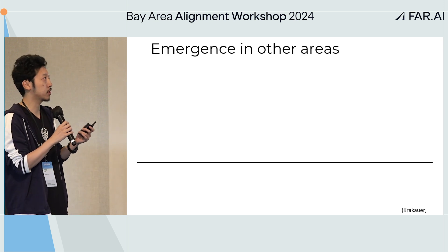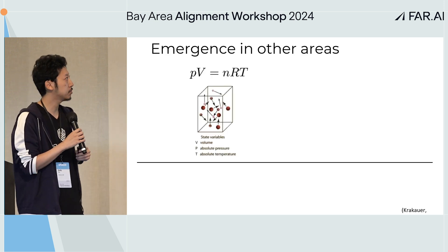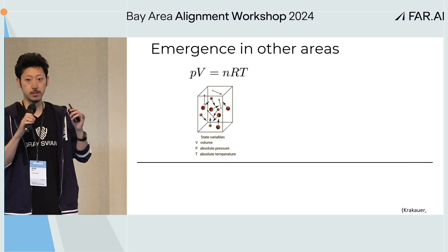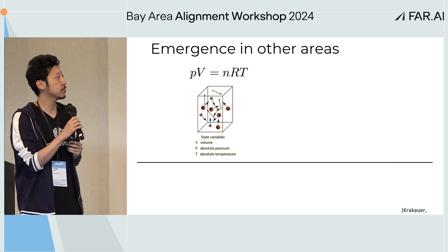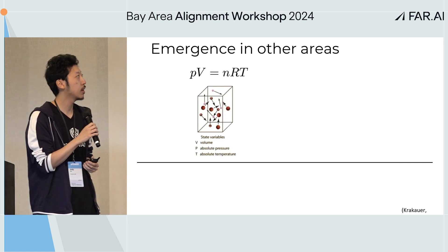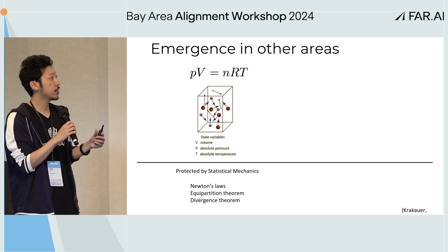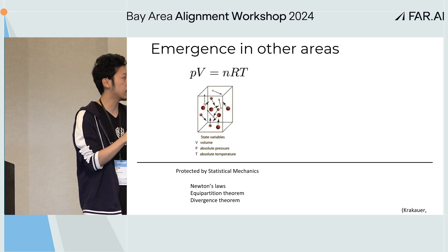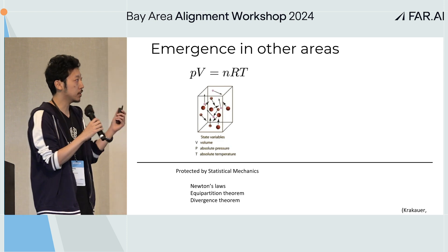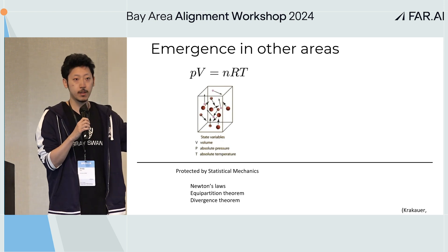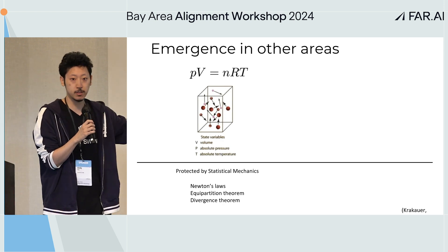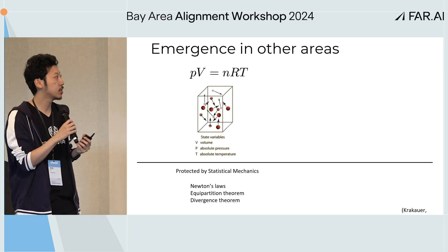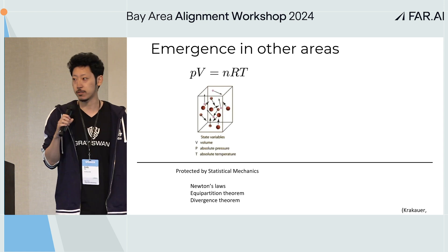To give an example of emergence from physics, consider the ideal gas law. We have a very chaotic system of random particles, but it can be simply described with a short equation of volume, temperature, and pressure. There are physical substrates — Newton's law, the equipartition theorem — underneath, but to predict the future states of the system, this equation is sufficient. This is the property of emergence: protected by statistical mechanics so you don't need to look under the hood.